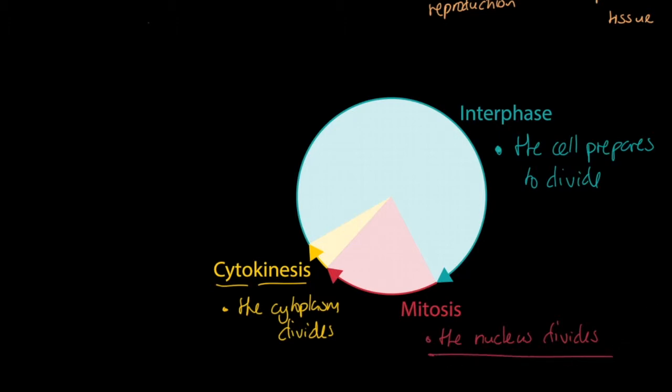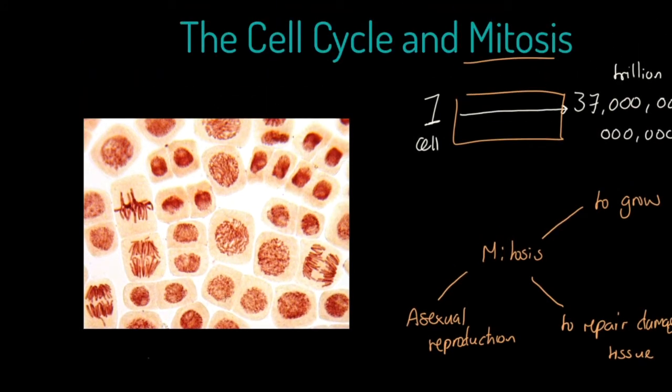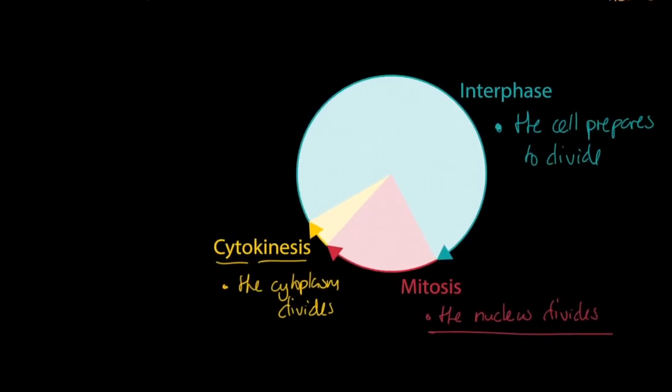We've got our three states. Notice the time allotment is far greater for interphase. Bearing this single fact in mind—the nucleus divides is mitosis—you could even now go back to our image here of some cells, some of which are going through mitosis. You might even, without even learning this yet, be able to identify which of these cells has evidence of the nucleus dividing.